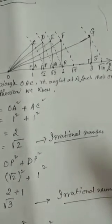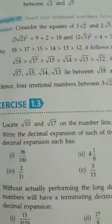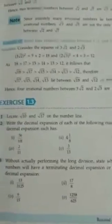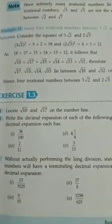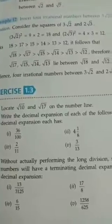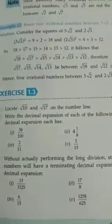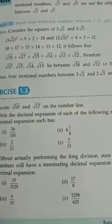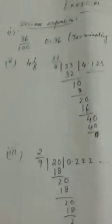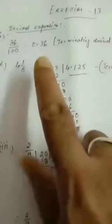Now let us take the next sum, sum number 2: write the decimal expansion of all the following numbers. The first question is given 36 by 100. Here you have to find out the decimal expansion, so just change into decimal numbers. You find that 36 by 100 is equal to 0.36.